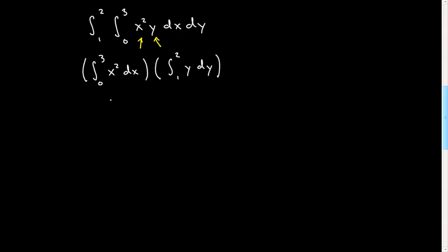And of course, then I'll just get, this is going to be my x cubed over 3. And this would be between 0 and 3. Sorry, I'll continue to draw brackets around this. And this would be my y squared over 2 between 1 and 2. And this is going to give me my 9. And this is going to give me my 3 halves. And together, I get the 27 over 2.